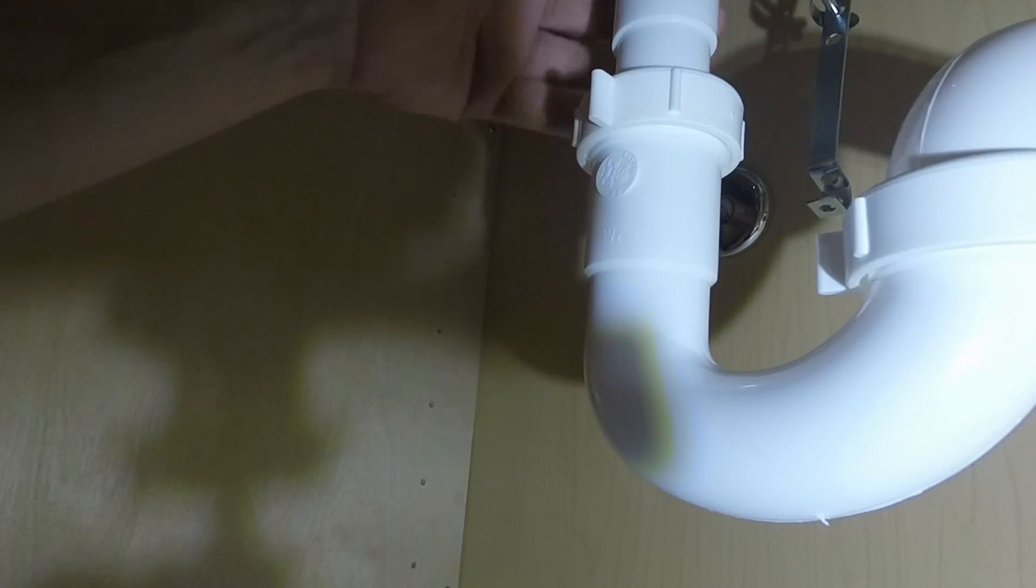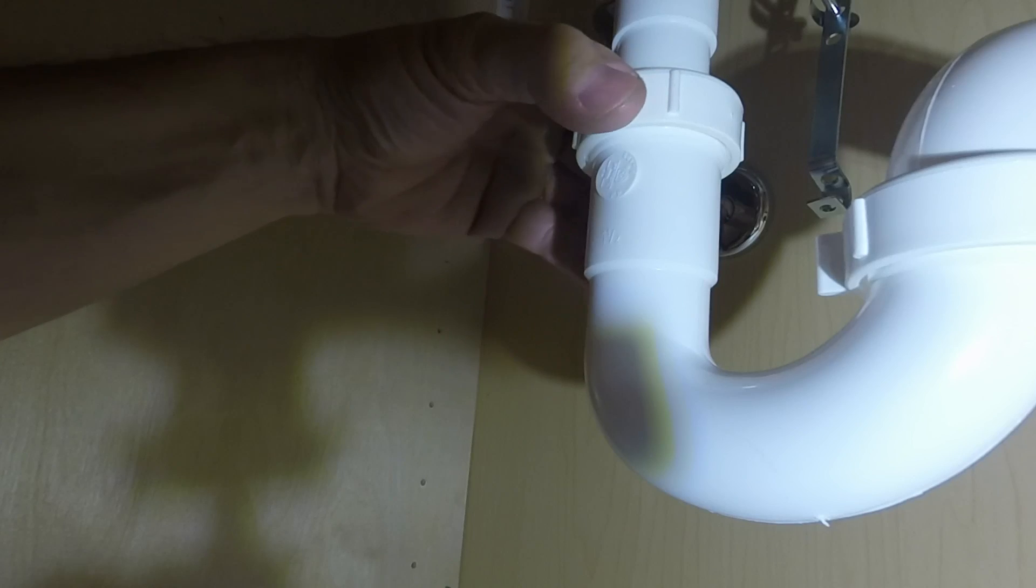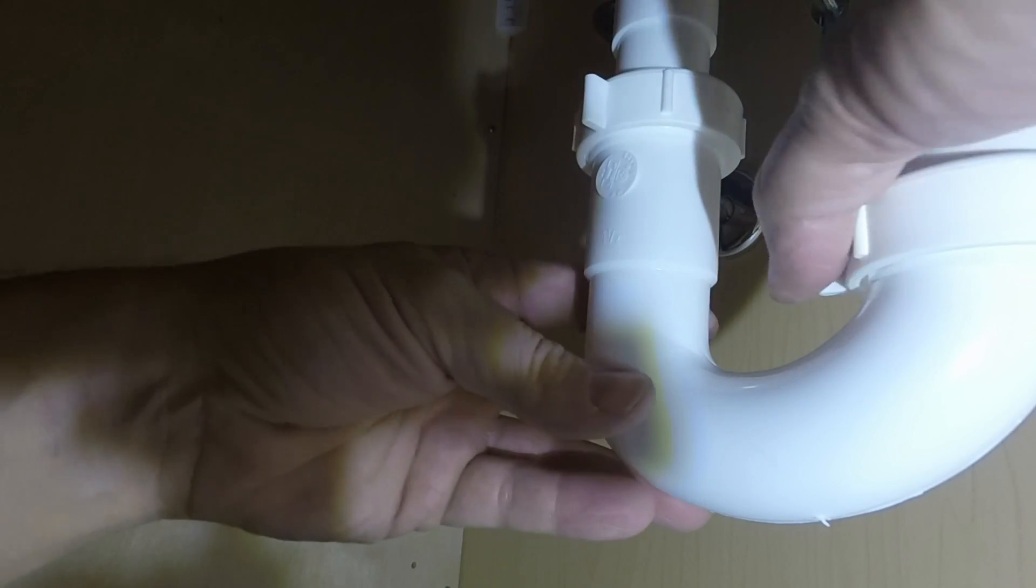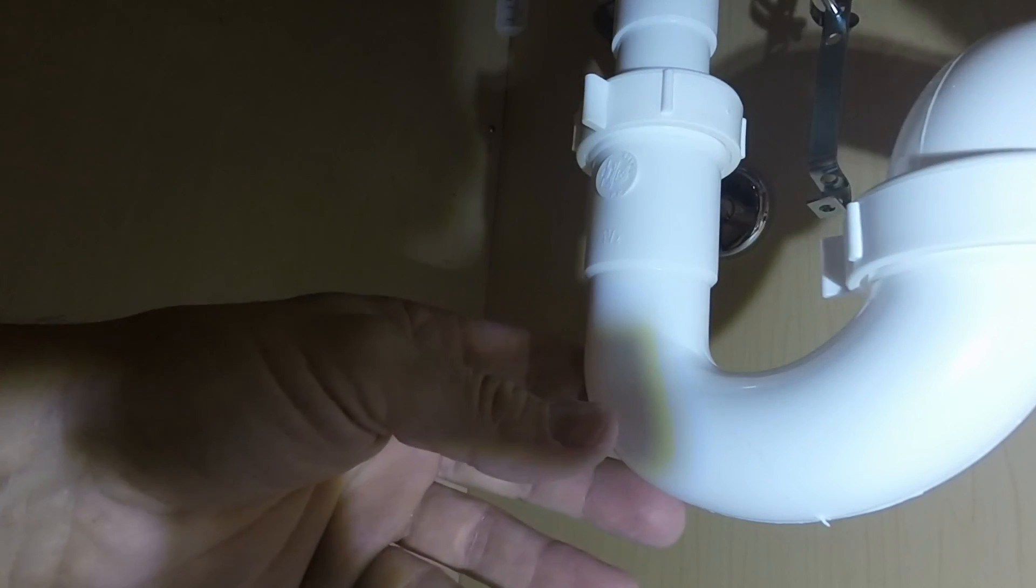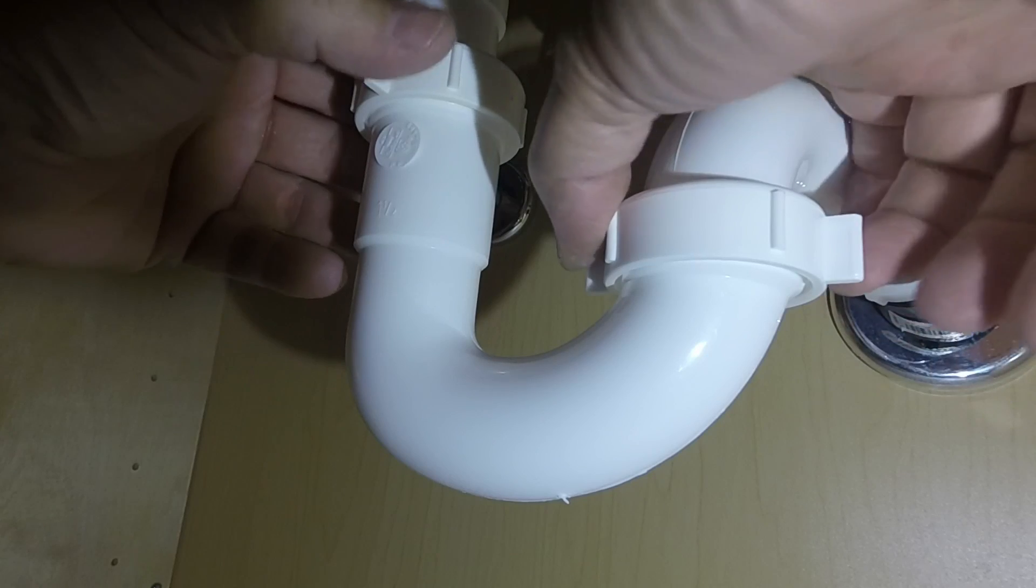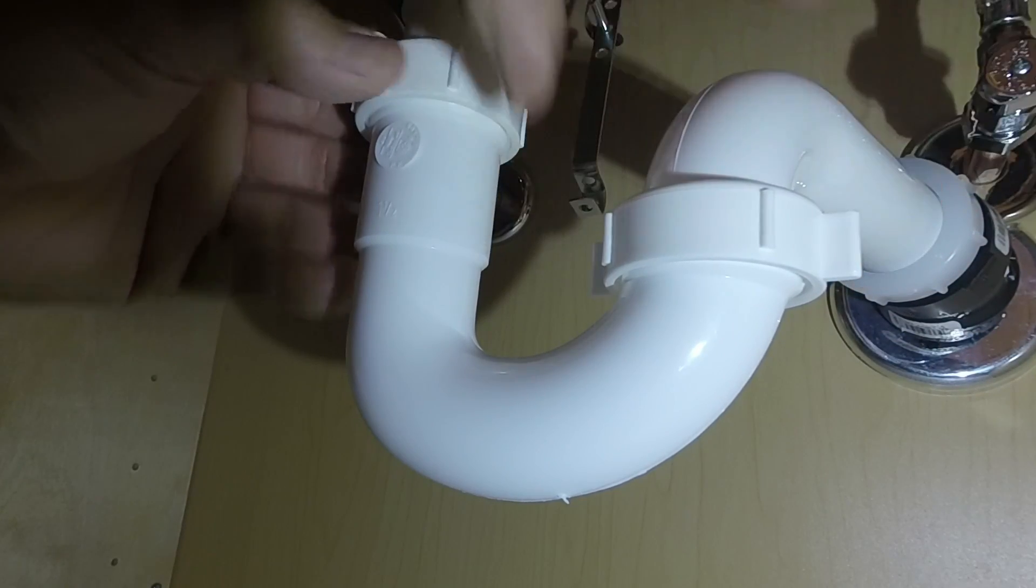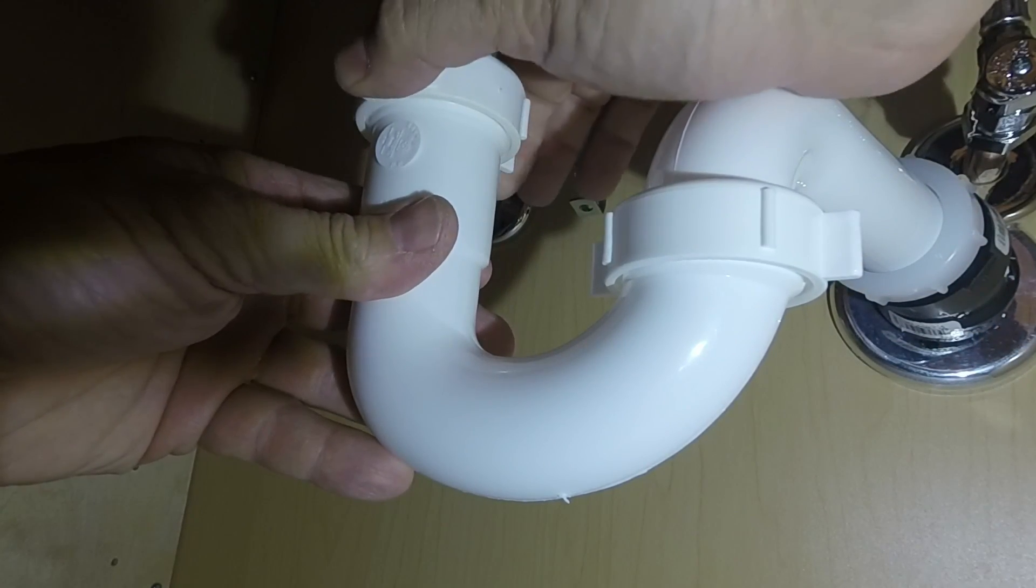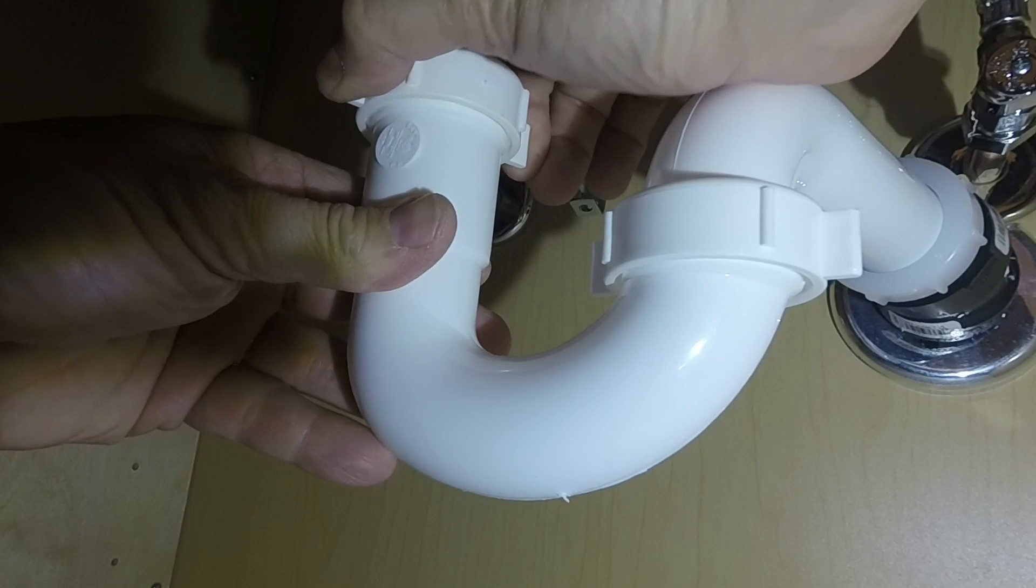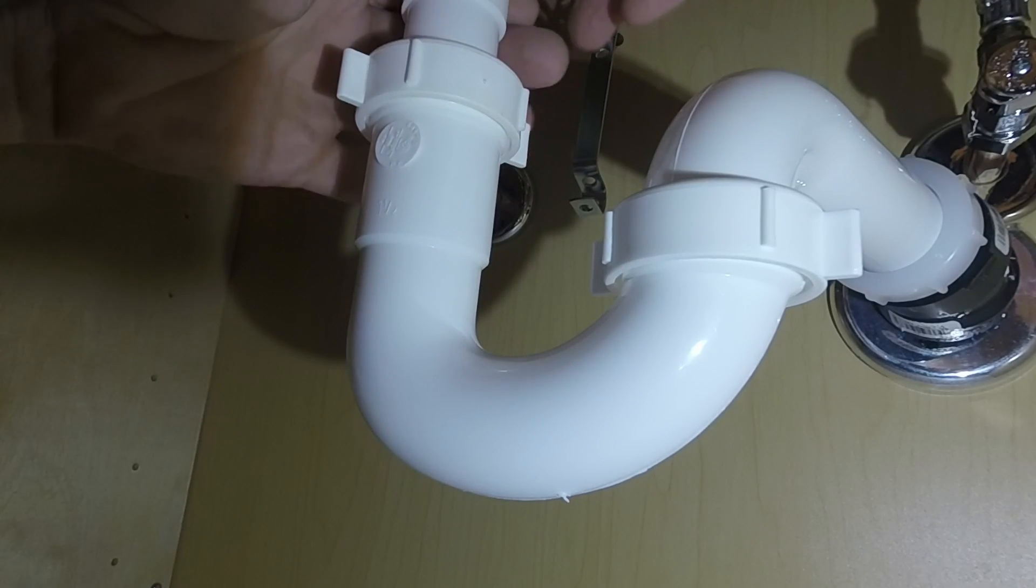Once everything is finger tight, you can just make sure it all lines up and it looks okay. And just make sure you're not putting a lot of pressure one way or the other on your drains. Because if you are, like I said, you may need to cut your piping so it lines up a little better. And if you like the way everything lines up, you can go ahead and tighten these down a little bit more just to where they're really snug.